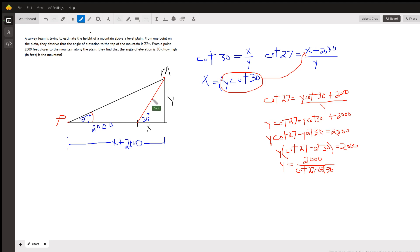The quantities we don't know: let x equal this distance right here from the second point on the plane to the base of the mountain, and y is what we're trying to find - the height of the mountain.